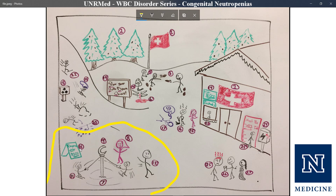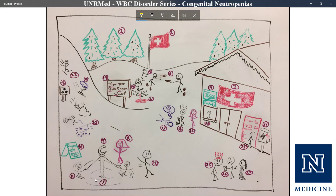Regarding the onset timing of cyclic neutropenia, the two kids in the scene represent that it typically presents in childhood. It usually self-resolves without any real treatment during puberty — shown by the adult walking away, who has grown up and no longer needs the cycle. But the kids are still in it. So: presents in childhood, resolves by itself with puberty — that's cyclic neutropenia.